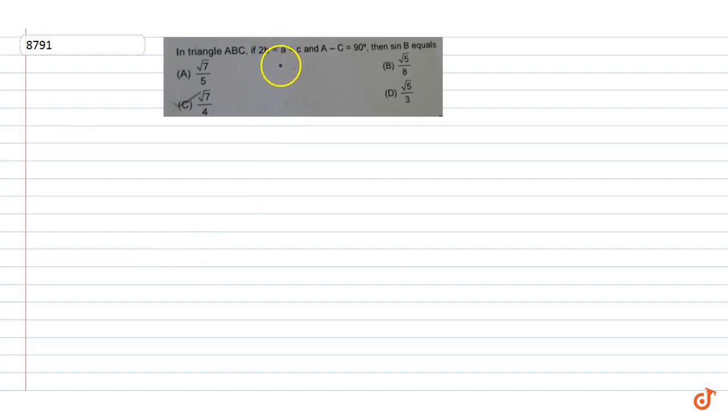In this question, in triangle ABC, if 2b is equal to a plus c and a minus c is equal to 90 degrees, then find sine b. Here it is given that 2b is equal to a plus c.